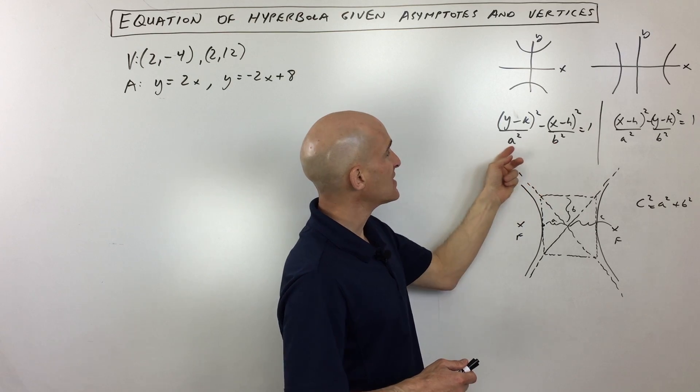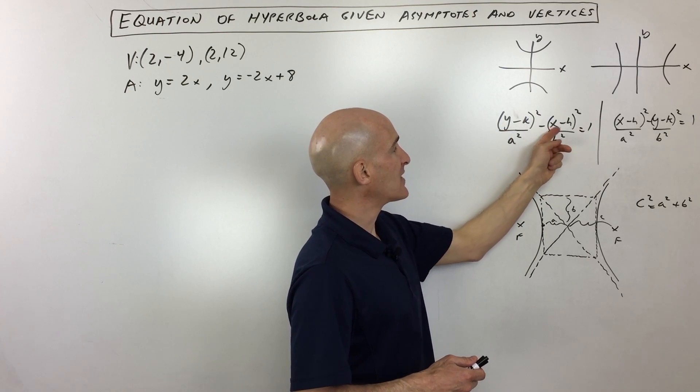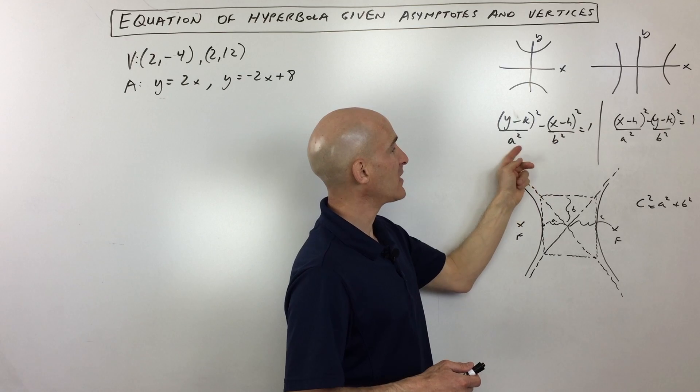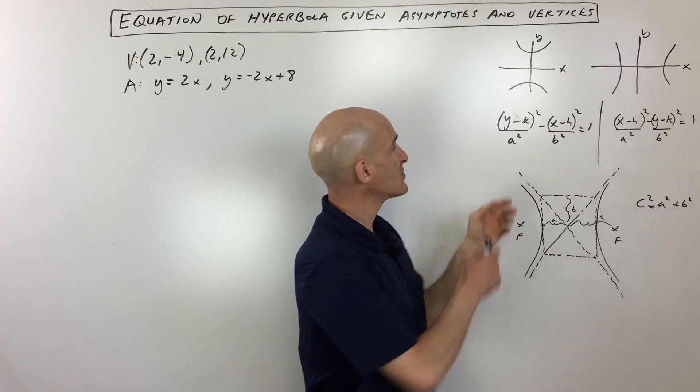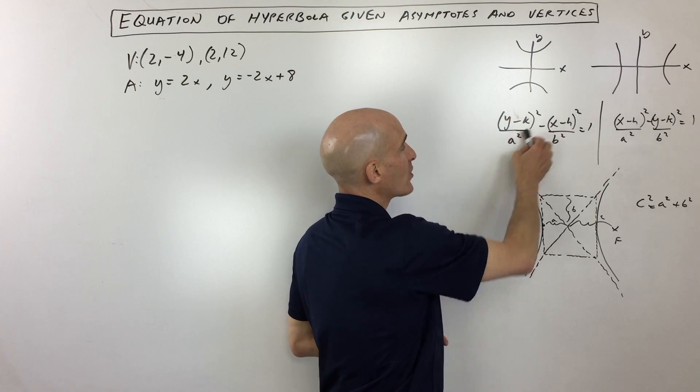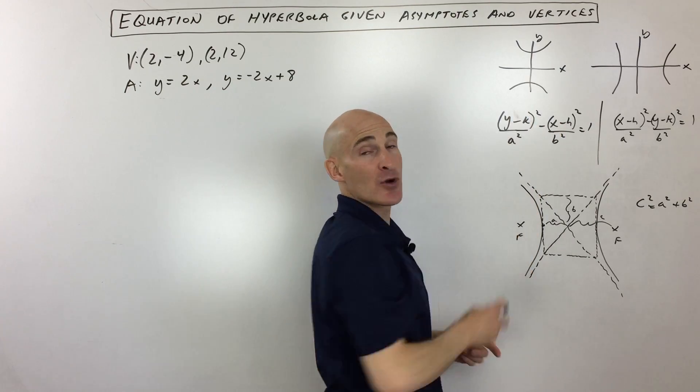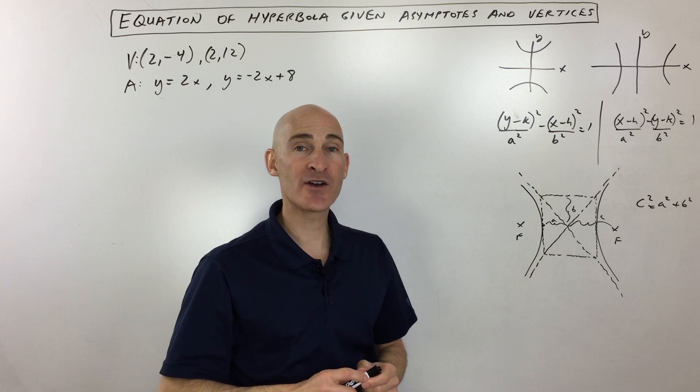The basic equation you can see is y minus k squared minus x minus h squared equals one, and you've got your a squared and your b squared. But the important differences here are that notice that here you've got the y squared as the positive term when the hyperbola is opening in the vertical direction, the y direction up and down.